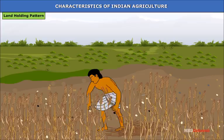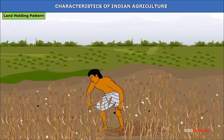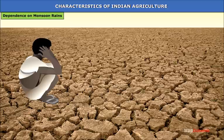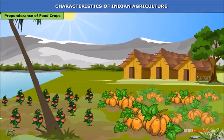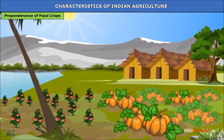Land holding pattern: Farmers in India own small plots of land and grow crops mostly for family consumption. More than one-third of the land holdings are small. Dependence on monsoon rains: There is high dependence on monsoon rains during a four-month period from June to September; the rest of the months are generally dry. Preponderance of food crops: Indian farmers mostly depend on food crops to meet their food requirements rather than commercial crops to meet their capital and cash needs.